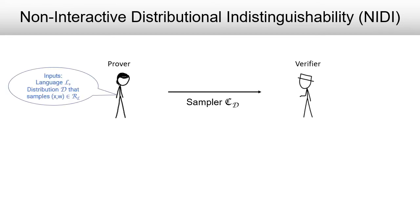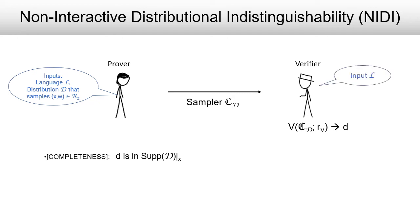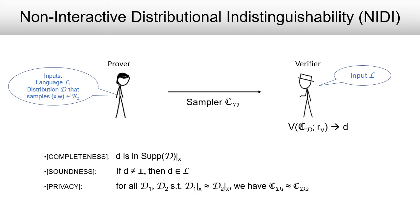A prover that has input a language L and a distribution D that samples instances and witnesses satisfying the relation corresponding to the language can generate a sampler and send it to the verifier, in such a way that the verifier can interact with the sampler and obtain samples from the language — that is, obtain instances in the language. The verifier is convinced that if it did not output bottom, it indeed output an instance in language L. Moreover, the privacy guarantee states that for all pairs of distributions that sample indistinguishable instances, the sampler for the first distribution is indistinguishable from the sampler for the second.